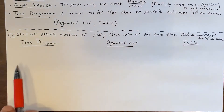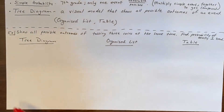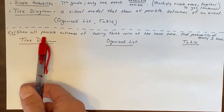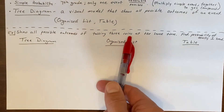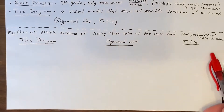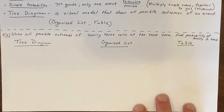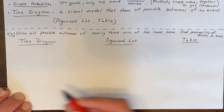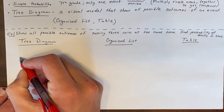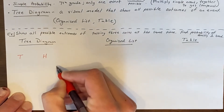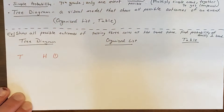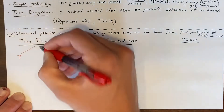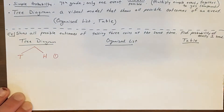Our first diagram is called a tree diagram, and we'll work off this example: show all possible outcomes of tossing three coins at the same time, and find the probability of exactly one heads. We have three fair coins, each with heads on one side and tails on the other. For the first coin toss we have two options — we could land on tails or land on heads.